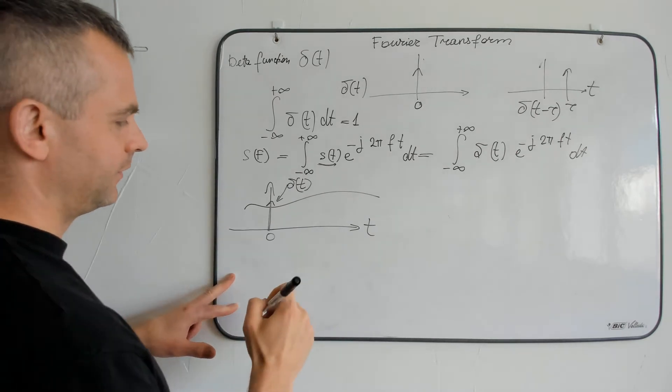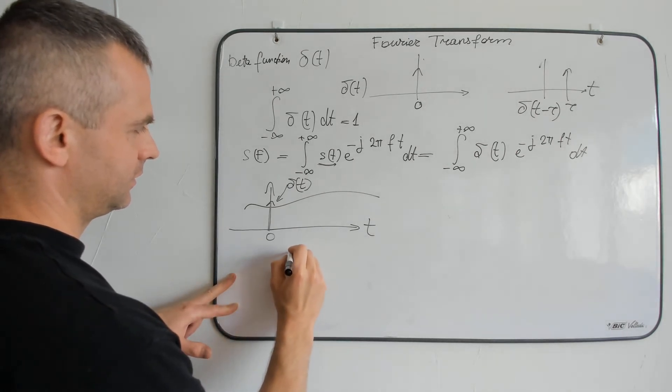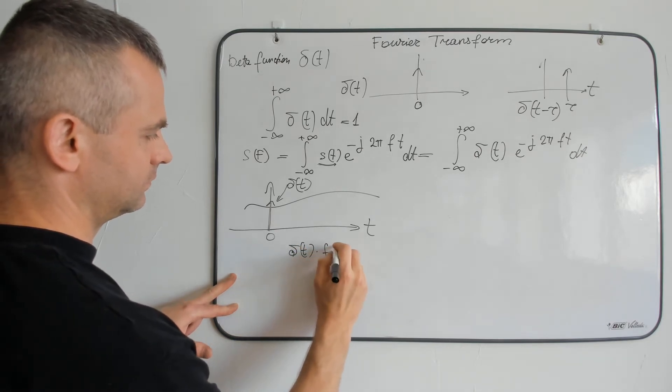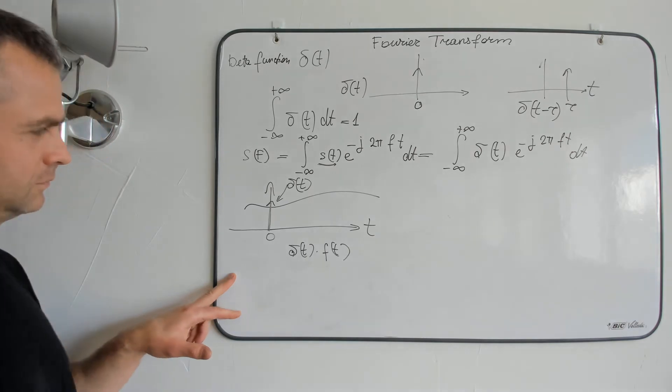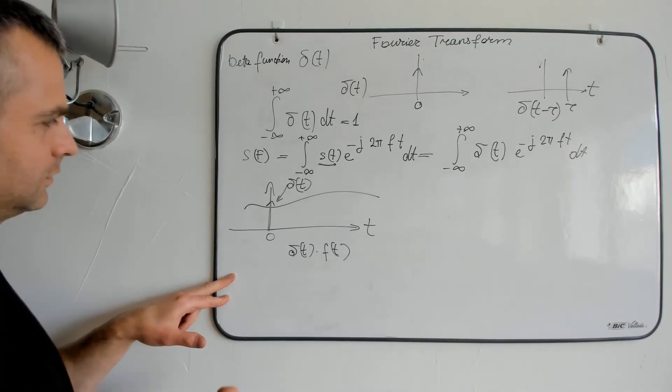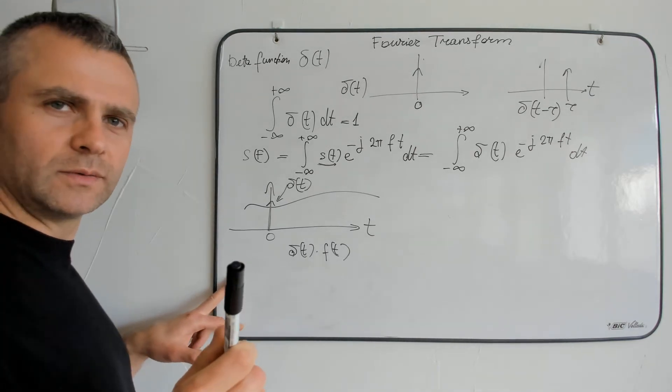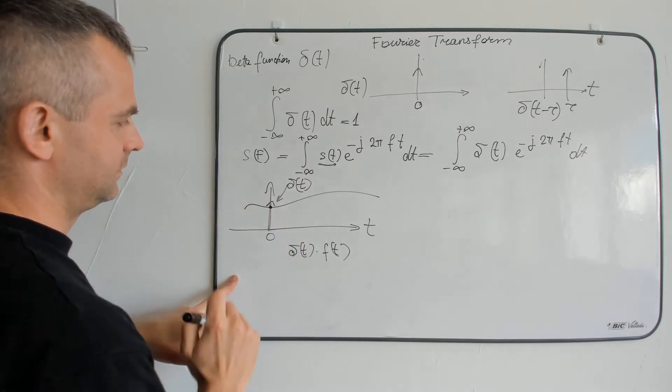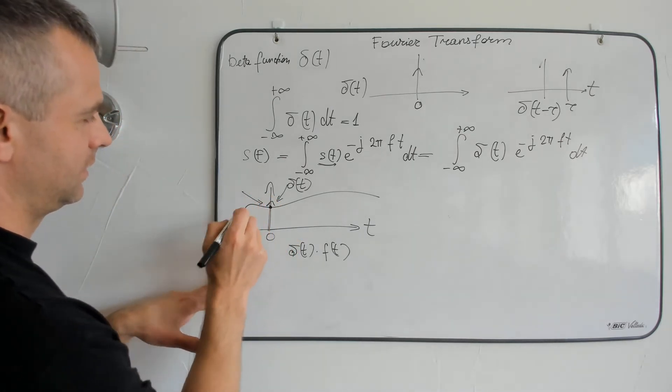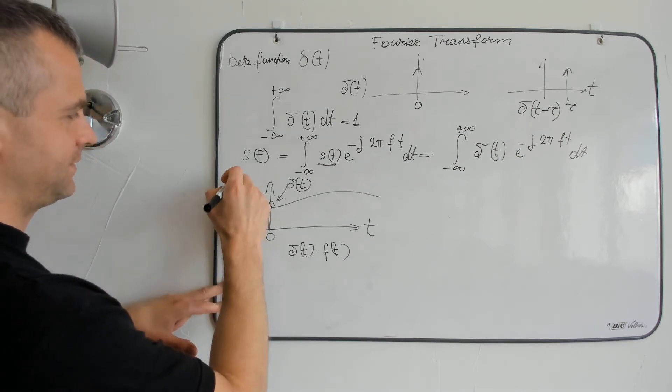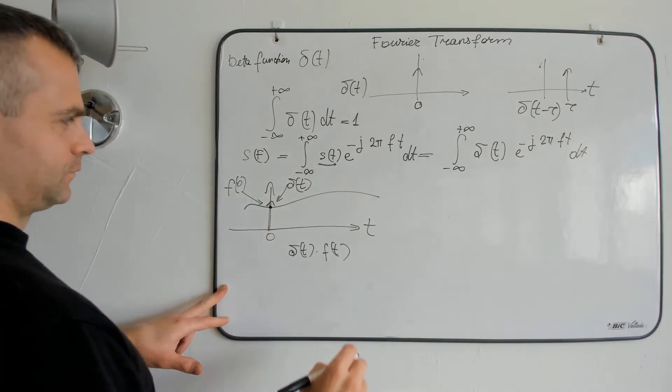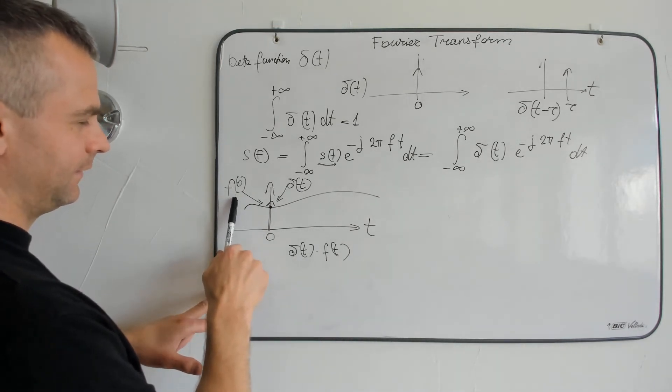What would be the relation of this multiplication? There is only one common point at the cross of both functions. Here. And what's this value? This value is f of 0. Actually, here is f of 0.